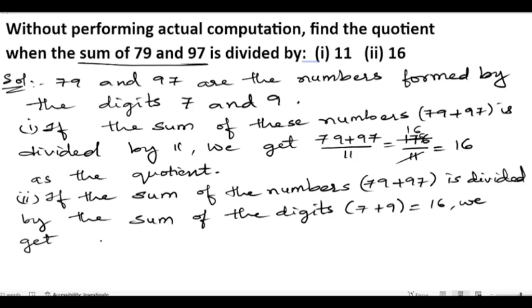So 79 plus 97 is 176 by 16. So 16 ones are 16, one left. 16 ones are 16, so we got 11 as quotient.